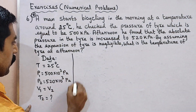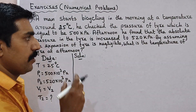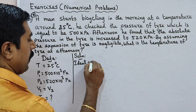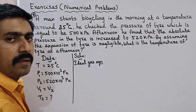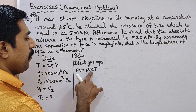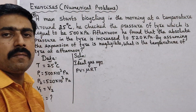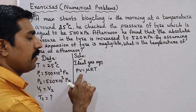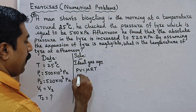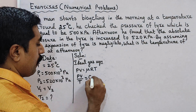So now we have the solution. What is the formula? The ideal gas equation. The tyre follows the ideal gas equation: PV is equal to μRT, where μ is the number of moles of molecules and R is the universal gas constant. Since μ and R are constant, PV divided by T equals μR, which is a constant.